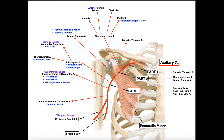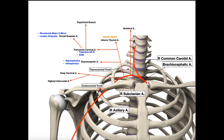The axillary artery comes from the subclavian artery. From the heart and the arch of the aorta, we have the brachiocephalic artery, which bifurcates into the right common carotid and the right subclavian artery. The arch of the aorta also directly gives off a left common carotid and a left subclavian. Regardless of which subclavian artery you're looking at, as soon as it passes over the margin of the first rib, it becomes the axillary artery on that side.